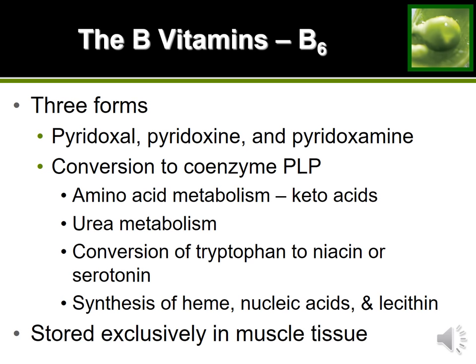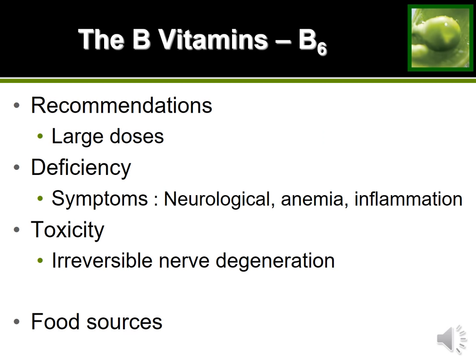Another unique thing about B6 is that it is actually stored in our muscles — an exception to the general rule that water-soluble vitamins aren't stored. Because it's stored, it can develop into a toxicity, which typically presents as irreversible nerve damage. Deficiency can also develop, presenting as neurological damage, anemia, and inflammation of the skin — all of which relate to protein structures, consistent with B6's role in protein and amino acid metabolism.